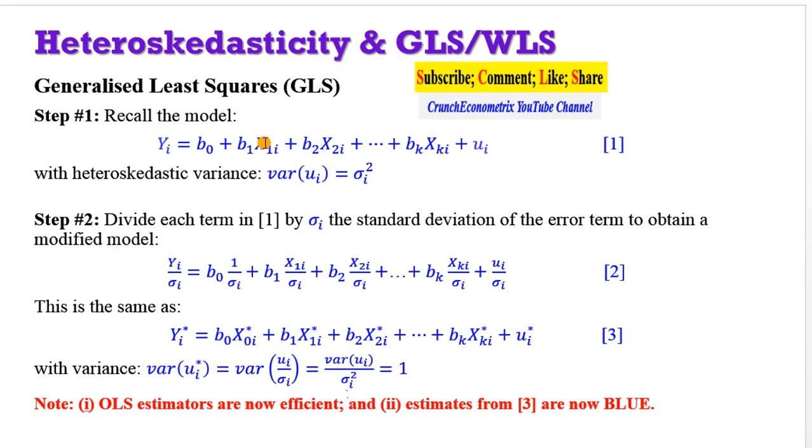On the screen is the stylized equation with respect to the generalized least squares. If you recall equation 1 that we have been using all along, equation 1 is heteroskedastic given by the error structure of the variance. With the sigma having a subscript i, it shows that the variance in this model is not constant. Now, to use the generalized least squares, you have to divide equation 1 by the standard deviation of the error term. And remember that the standard deviation is the square root of the variance. So dividing equation 1 by the standard deviation as shown in equation 2 transforms the model to equation 3. And that also transforms the variance to be equal to 1. So by the time you deploy the GLS approach, OLS estimators are now efficient and the estimates from equation 3 are now BLUE.